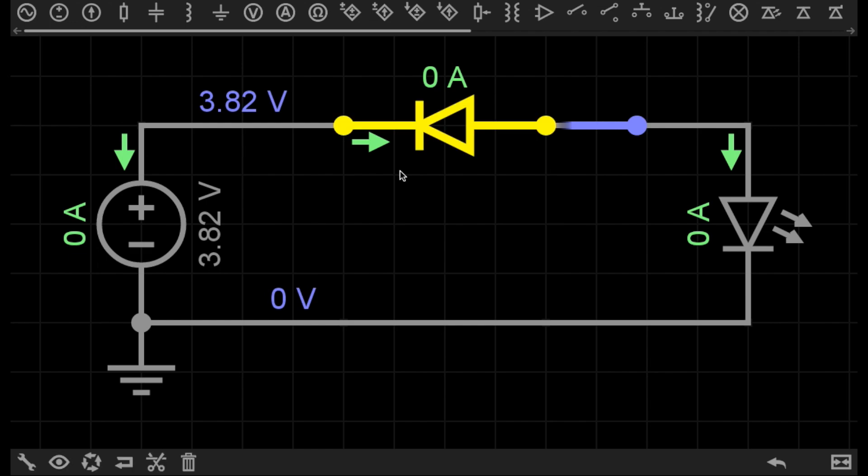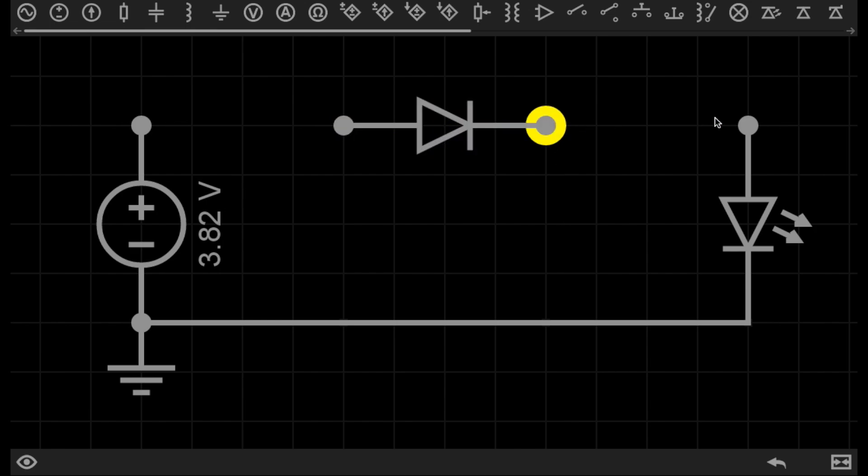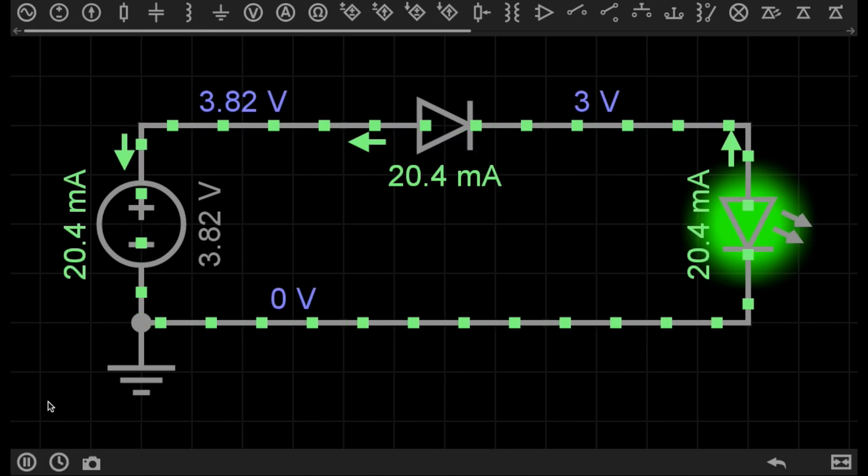So if I now go ahead and disconnect this diode again, flip it the other way, reconnect it, and then click play. It allows current to flow.